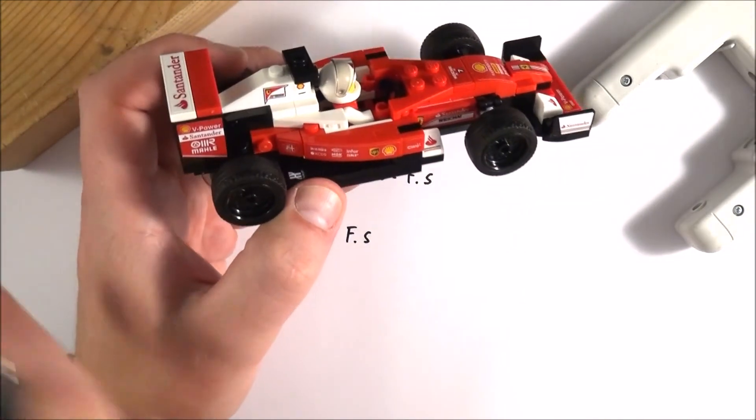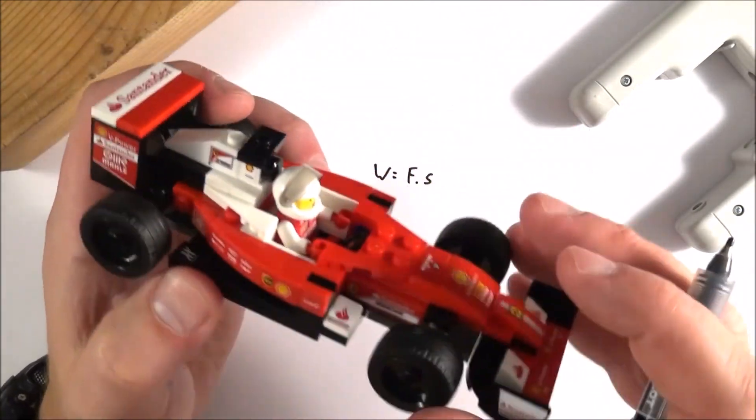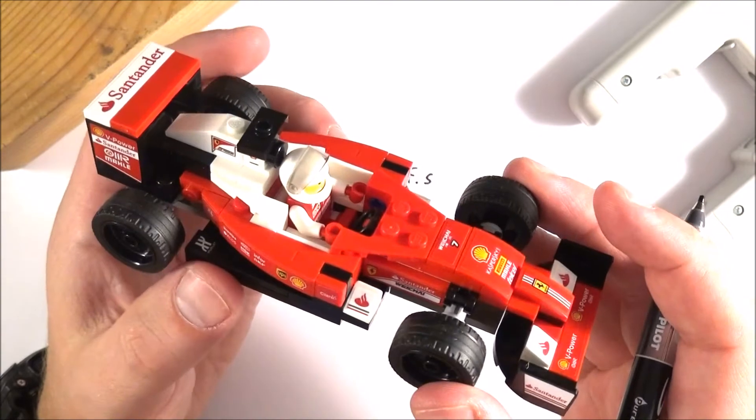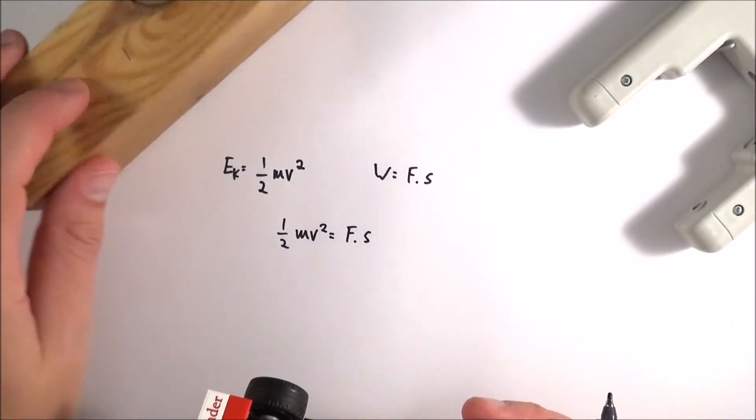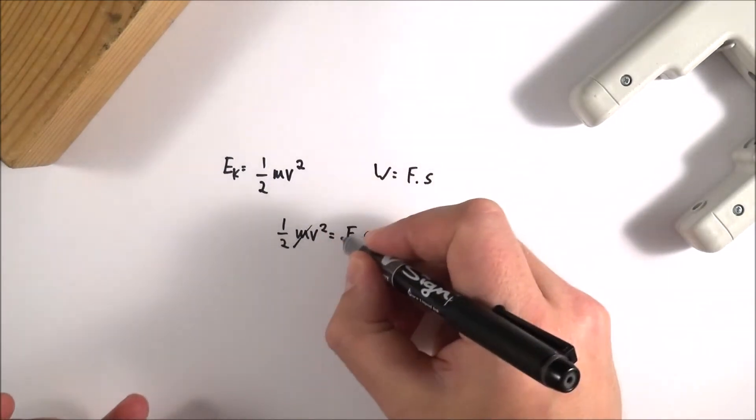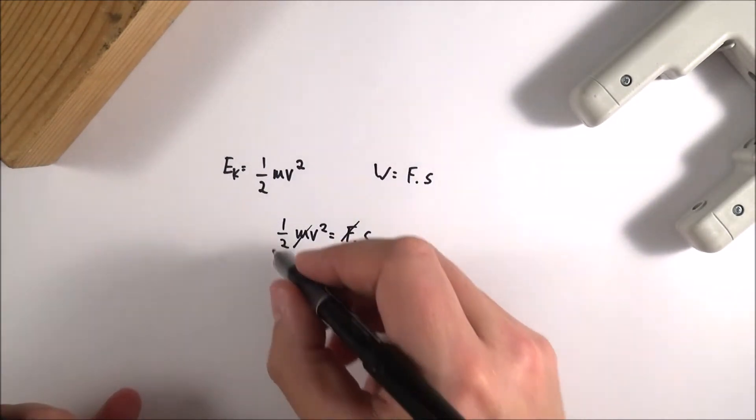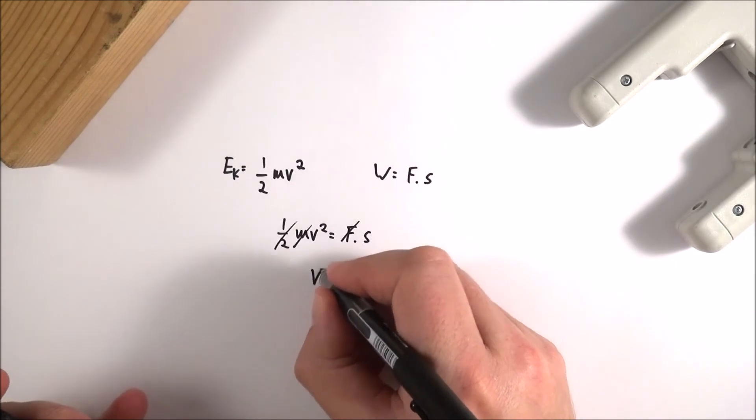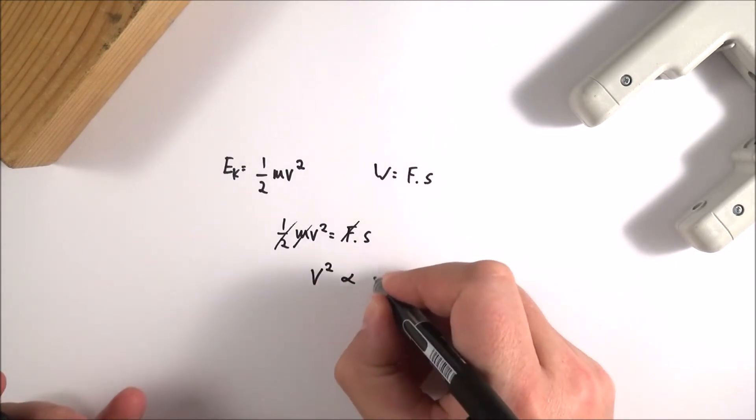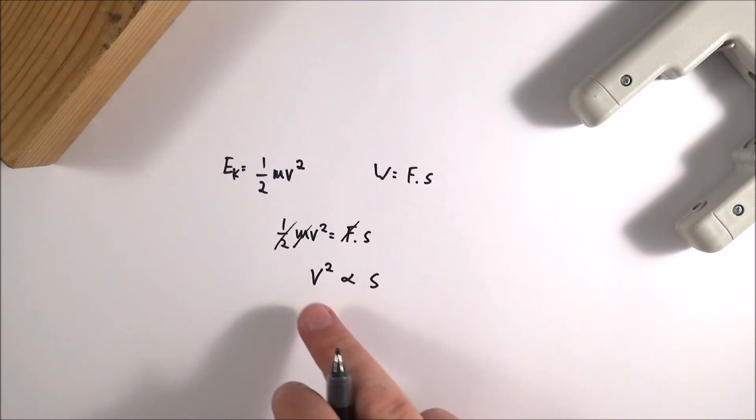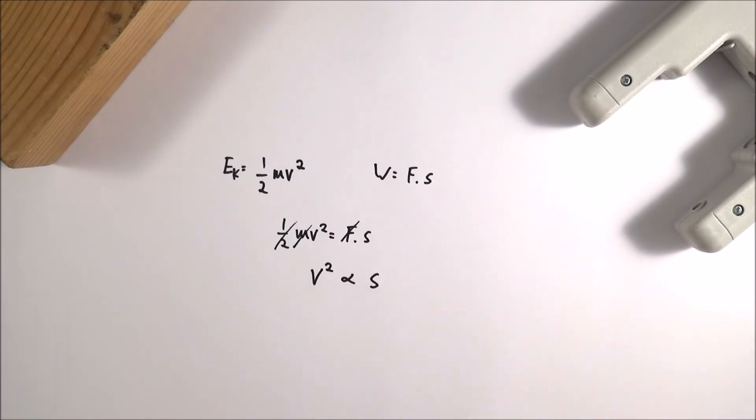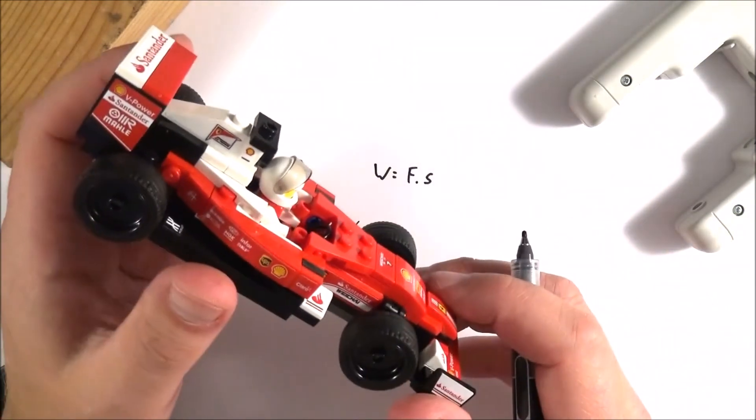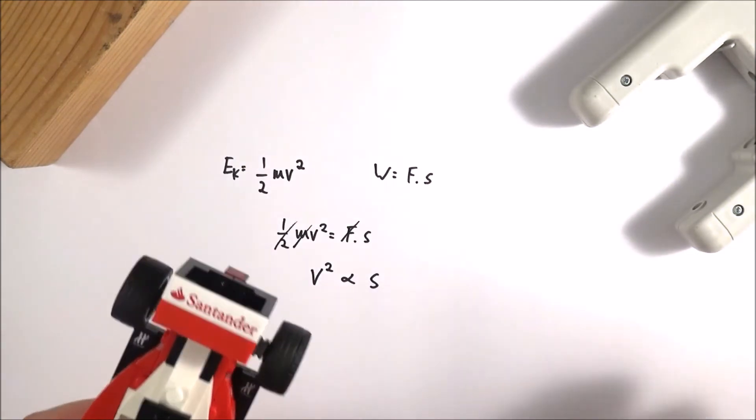Now this car doesn't change mass, neither does the block, and the force applied by the brakes if that's constant or indeed the frictional force between the block and the table, that will be a constant value. That means then that m and f are both constants. Obviously a half is a constant, so that means then that v squared should be proportional to the distance traveled. What that means is if you go twice as fast it will take four times further to stop and you should find something similar with your data.